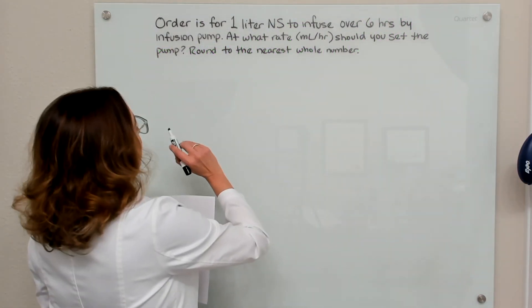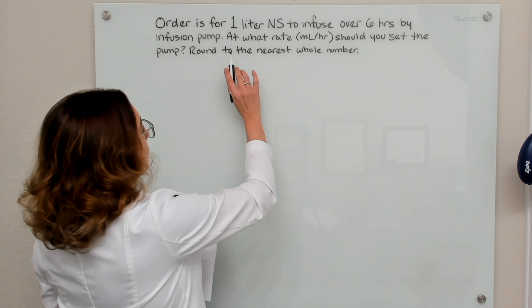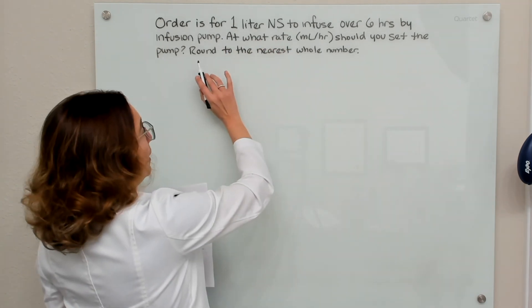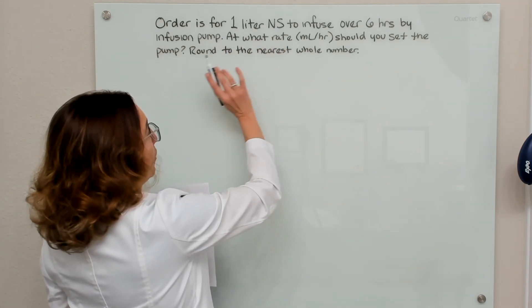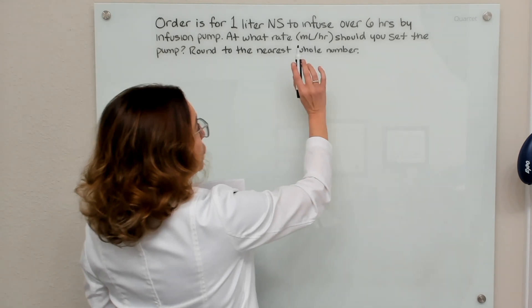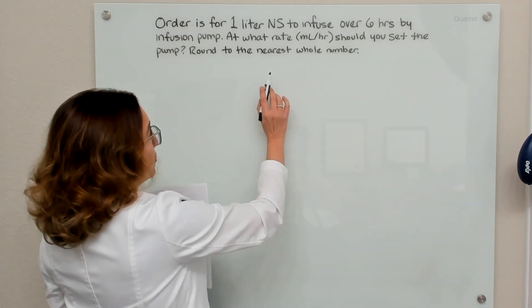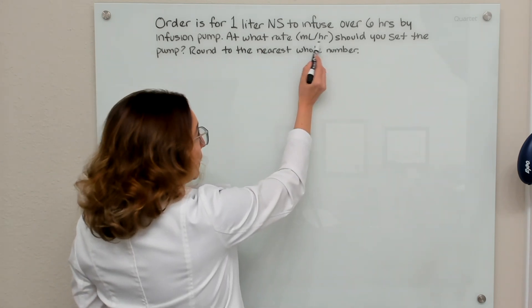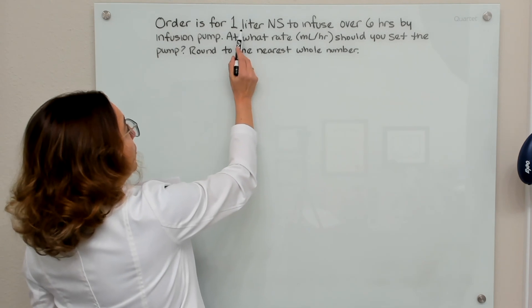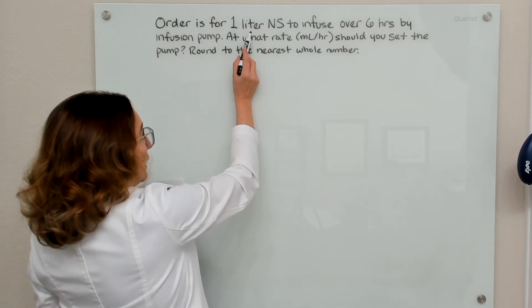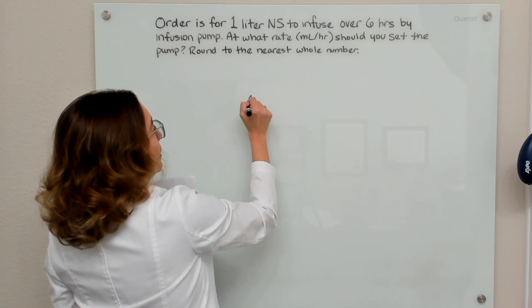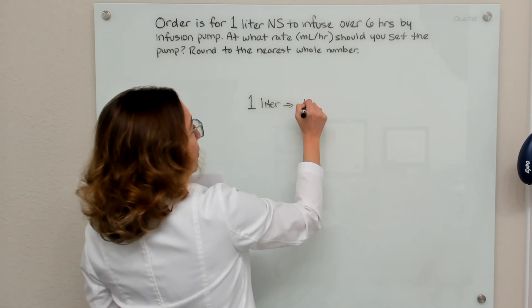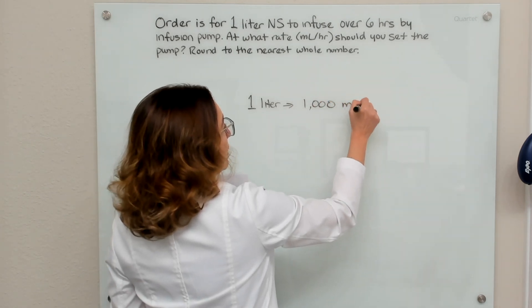So in this first example, we have an order to infuse one liter of normal saline over six hours by infusion pump. We need to know what rate in milliliters per hour we should set the pump, and we want to round our answer to the nearest whole number. We want our rate in milliliters per hour, and the volume we need to infuse is one liter — not milliliters. So the first thing we need to do is convert our one liter to milliliters: one liter equals 1,000 milliliters.